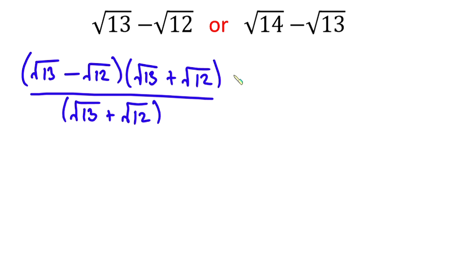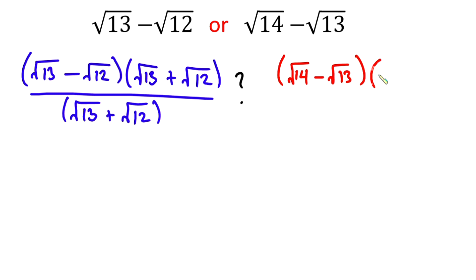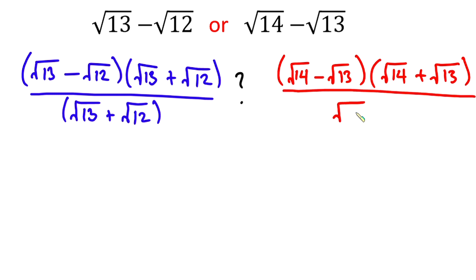Then I'm gonna put a question mark here because we are comparing. From this side we're gonna do the exact same thing: we have root 14 minus root 13, times its conjugate which is root 14 plus root 13, divided by root 14 plus root 13.